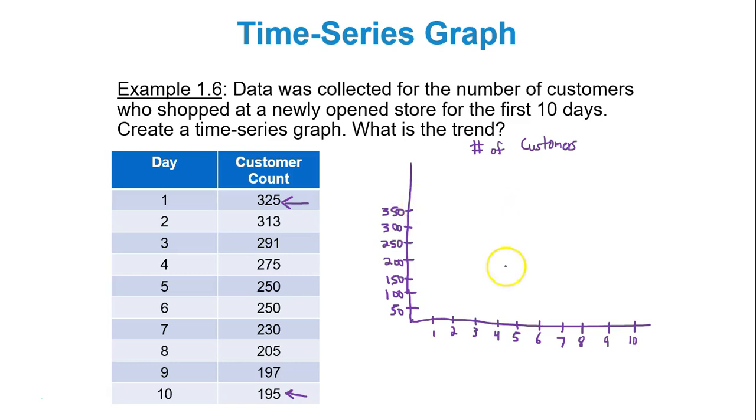And then we draw our dots. On day 1 we had 325. Let me be a little bit proper here. Day is my x-axis and then frequency is my y-axis. I would write this vertically but I don't feel like tilting my head sideways right now. Day 2 you got 313. Day 3 you have 291 so just below 300. Day 4 you got 275. Not drawing the scale by the way. Day 5 you have 250. Day 6 you also have 250. Day 7, 230. Day 8 you got 205. Day 9, 197, so just below 200. Day 10 you got 195.